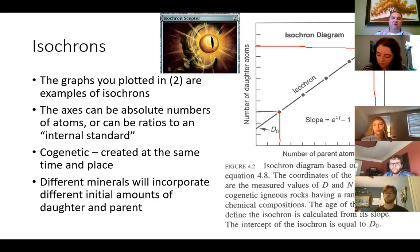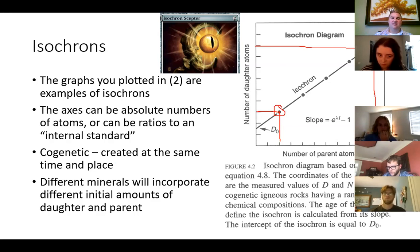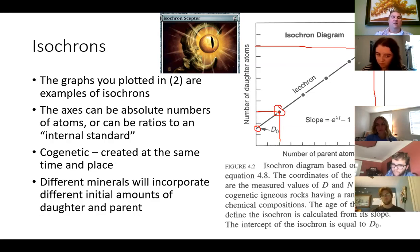It's just that some minerals are going to incorporate more of the parent and the daughter, and other minerals are going to incorporate less of the parent and the daughter when they're formed. The minerals that incorporate more of the parent are going to form more of the daughter as they decay. The minerals that incorporated none of the parent are not going to form any more daughter. You can plot these as absolute numbers of atoms, or you can plot them as ratios to some sort of internal standard. All of the points on the plot — one of the assumptions is that they're co-genetic, meaning the materials are created at the same time and place.